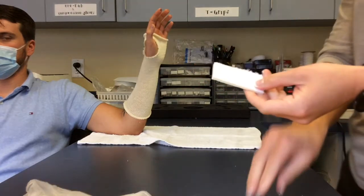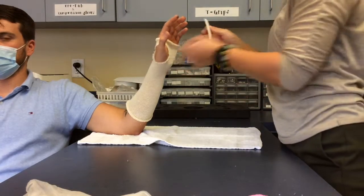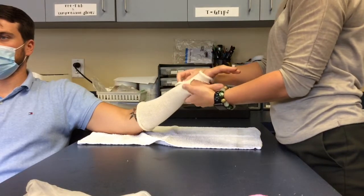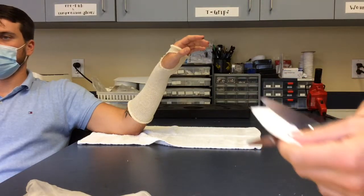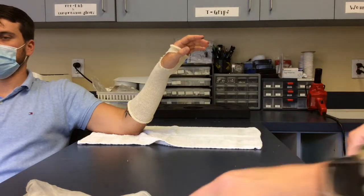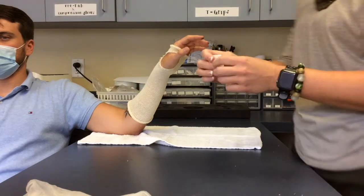Next you want to take your foam padding and cut it appropriately, placing the padding over the bony prominences of the hand and forearm. For example, I will be placing the padding over the ulnar styloid.